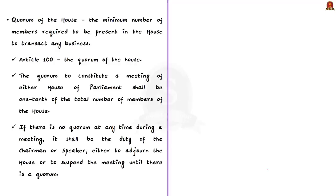What is meant by quorum of the house? It refers to the minimum number of members required to be present in the house so that the house can transact any business. Article 100 deals with the quorum of the house. As per the article, the quorum to constitute a meeting of either house of the parliament shall be one-tenth of the total number of members. If there is no quorum, it shall be the duty of the chairman or speaker to adjourn the house or suspend the meeting until there is a quorum.